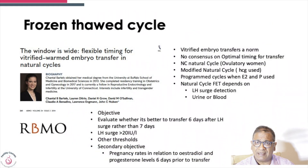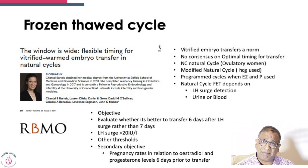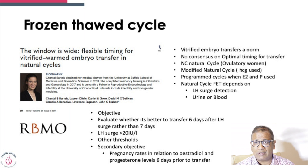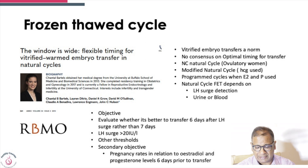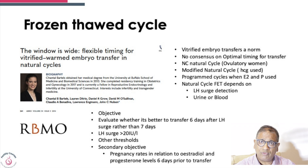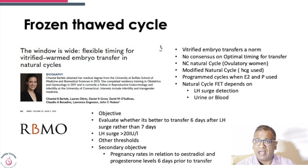So what did they do? They asked what to do with vitrified blastocysts, noting there is no consensus on the optimal transfer timing in a natural cycle. There are several cycle types: a natural cycle depending on LH surge, a modified natural cycle where HCG is given to induce ovulation, and programmed cycles where you either down-regulate and then give estrogen, or start medication on the first day of the period and then give estrogen.